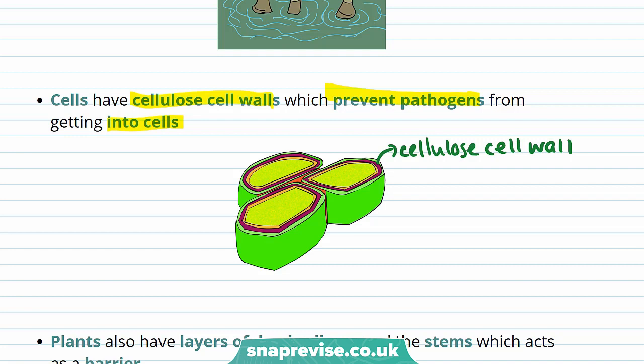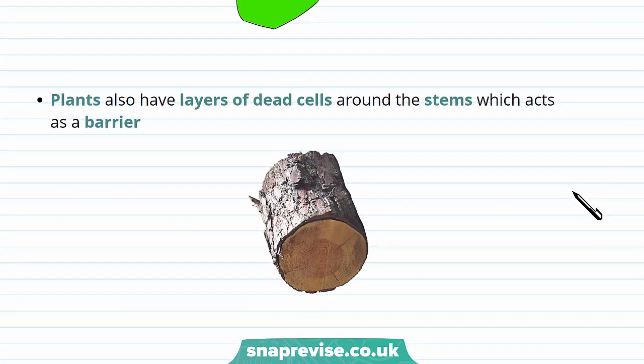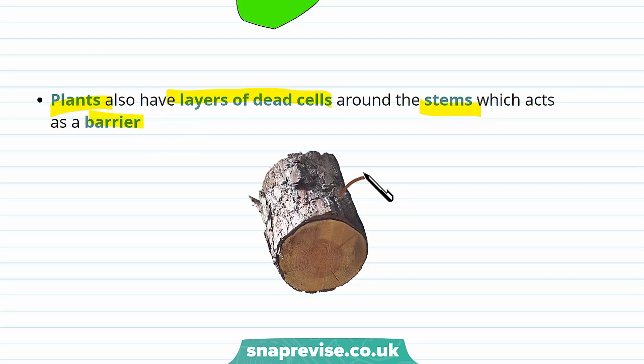Cell walls can also contain chemicals which are activated in the presence of pathogens and help prevent pathogens from entering the cell. Another physical defence is that plants have layers of dead cells around the stems, which act as barriers — for example, the bark of a tree. As pathogens can't enter dead cells, this prevents infection.